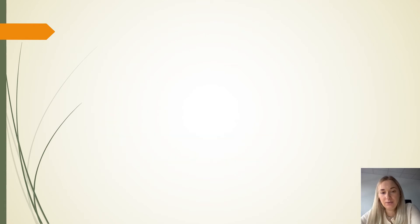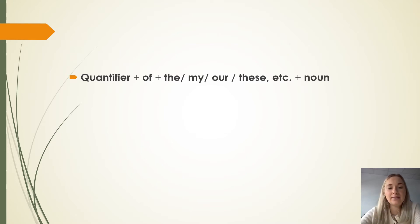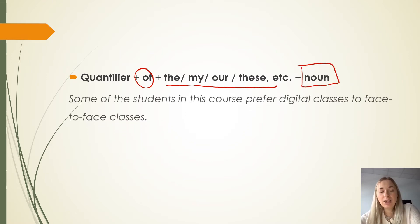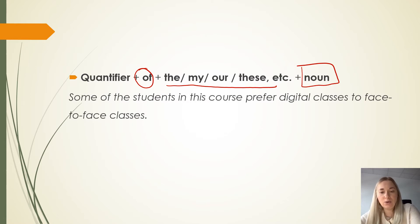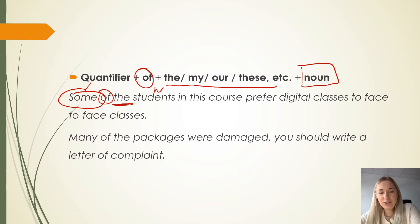There are also different constructions like quantifier plus of plus determiner and then only comes a noun. Some of the students in the course prefer digital classes to face-to-face classes. So we have quantifier some, then we have of, determiner, and only then comes the noun. Many of the packages were damaged, you should write a letter of complaint. Again, quantifier many, of, determiner, and packages.